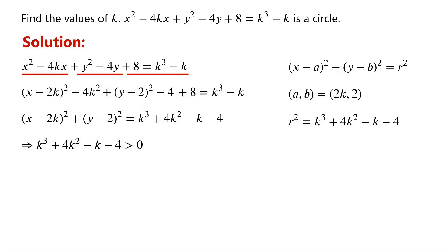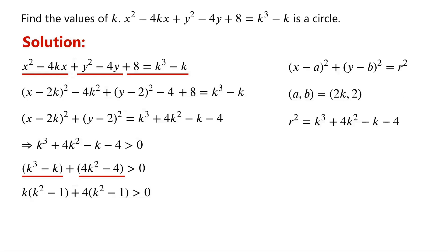Rearranging the order of the terms, we have k cubed minus k plus 4k squared minus 4, is greater than 0. k cubed minus k can be written as k times (k squared minus 1), and 4k squared minus 4 can be written as 4 times (k squared minus 1). The two terms on the left-hand side share a common factor k squared minus 1, so they can be factored as (k squared minus 1) times (k plus 4).